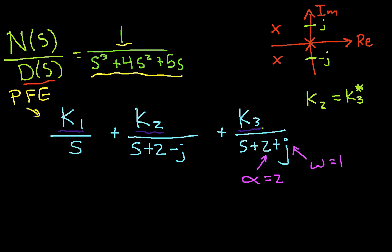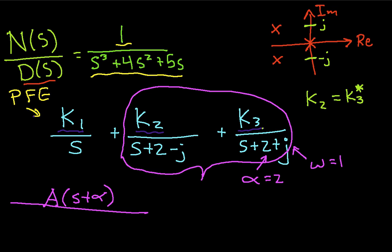And with those definitions, and some mathematical manipulation, you can take this chunk of 2 terms, and you can write it in the following form. You can write it as a times s plus alpha over s plus alpha squared plus omega squared plus b omega over the same thing.